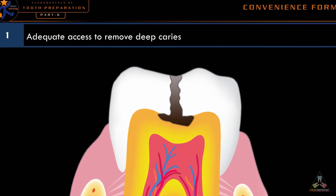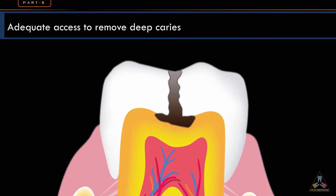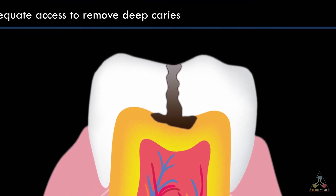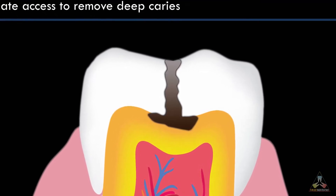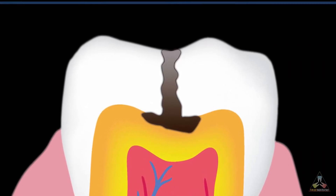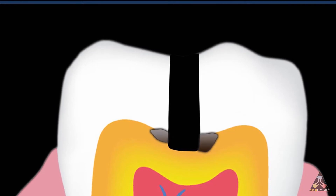Let's see an example to understand the first feature, that is adequate access to remove deep caries. There is a caries in a tooth which is very narrow and deep. Most pit and fissure caries will have a similar appearance. Once the decay reaches the dentinoenamel junction, decay will spread along the dentinoenamel junction. One of the fundamental concepts in operative dentistry is preservation of tooth structure. According to the principle, we remove the decay from the occlusal surface as shown in the picture.